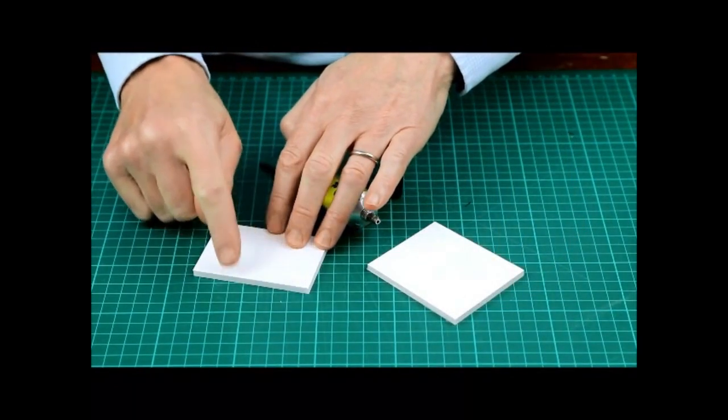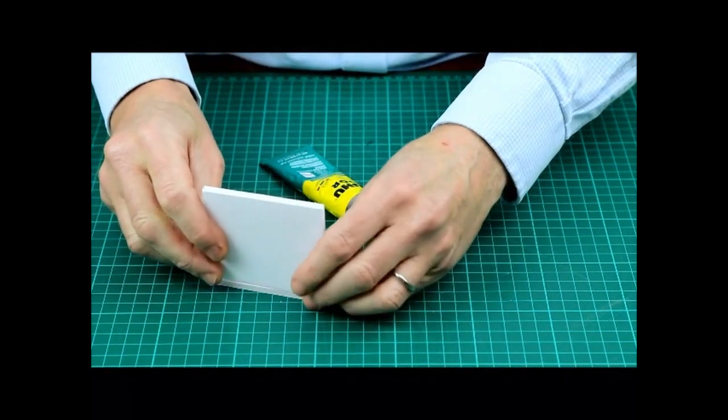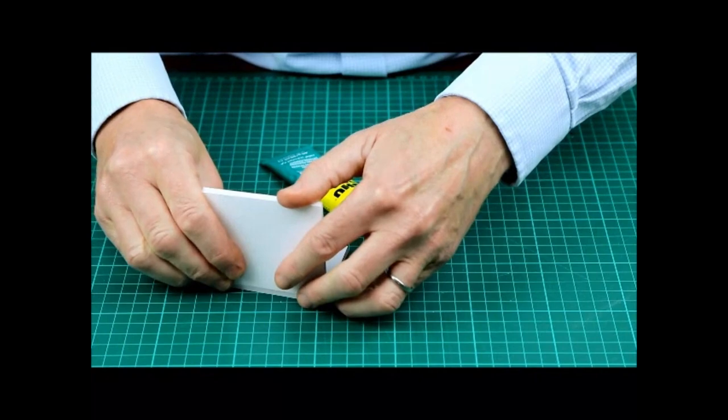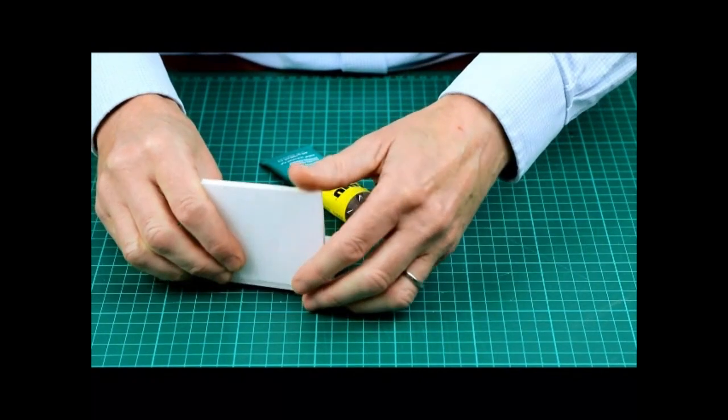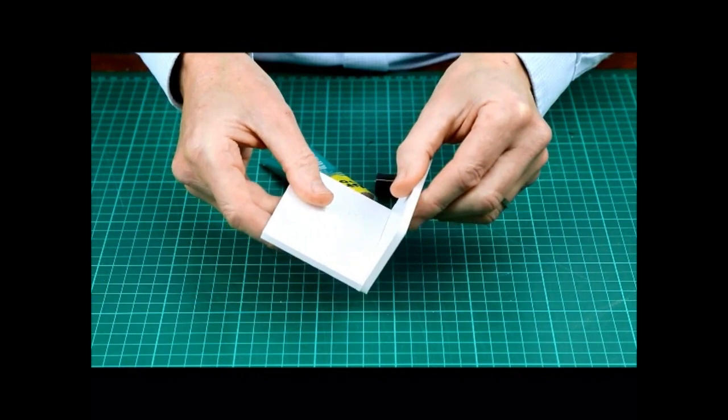When the glue is touch dry you can bring the two pieces together. Push down firmly and this will give you an instant and very strong bond.